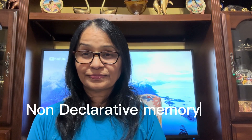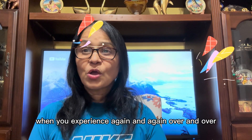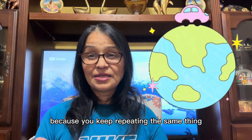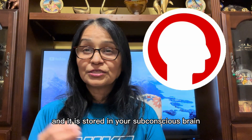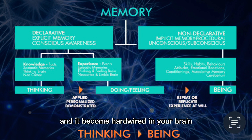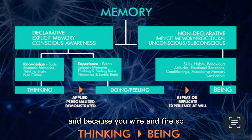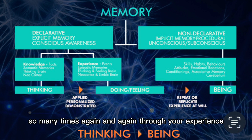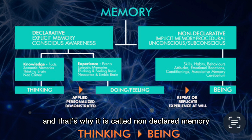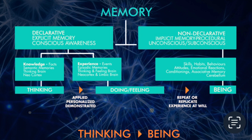This way we learn not just with our mind but also with our heart. What is non-declarative memory? When you experience something again and again, over and over, it becomes automatic. Because you keep repeating the same thing, it becomes implicit — you are unconscious of it. It is stored in your subconscious brain, which we call the cerebellum, and it becomes hardwired in your brain. Neurons wire together and fire together.